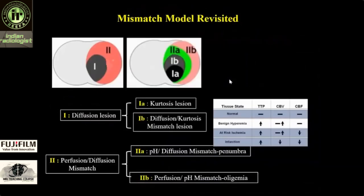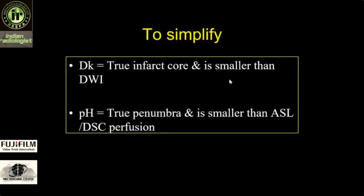What you need to remember is: here, what we are determining is restricted diffusion — the core or dead brain — and the penumbra, which can be saved on perfusion. But actually these are not two things; they are four things. Beyond actual diffusion, a smaller area represents kurtosis diffusion. Inside the actual penumbra, there is a small area with PH mismatch. Diffusion kurtosis equals the true infarct, and it is smaller than actual diffusion — this is the basis of the diffusion reversal phenomenon. PH equals true penumbra, and it is smaller than what you see on perfusion.